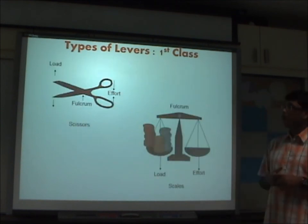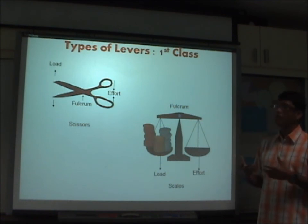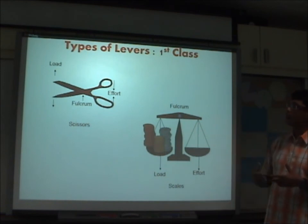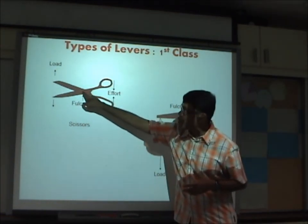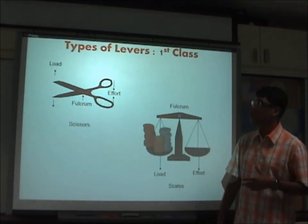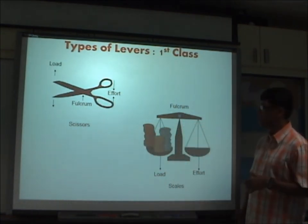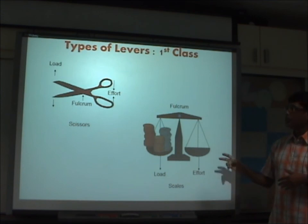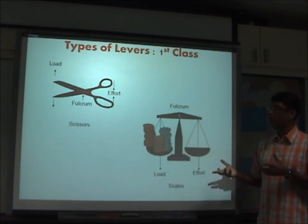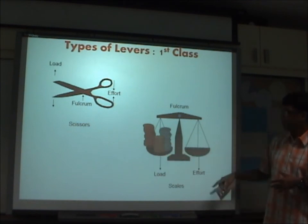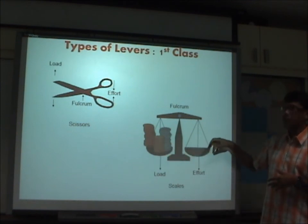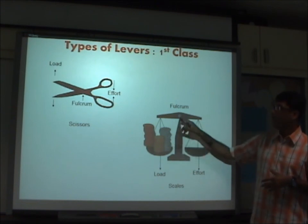A very good example of a first class lever in daily life is scissors — the effort is applied at the handles, the fulcrum is the movable joint in the middle, and the load is the paper you're cutting. Another example is a traditional weighing balance: the load is placed on one side, a known weight on the other, and the movable joint in the middle is the fulcrum.